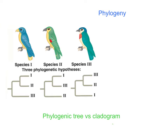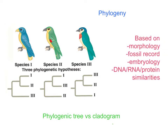We're going to focus the rest of this unit on phylogeny — the study of evolutionary relationships. With phylogeny, we look at how organisms are related through time, evolutionarily. Phylogeny is based on morphology, the fossil record, embryology, and DNA, RNA, and protein similarities — all of which are evidence that evolution exists.